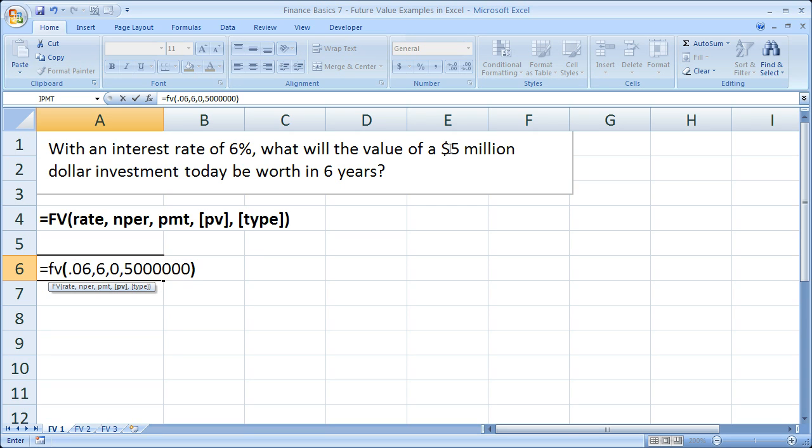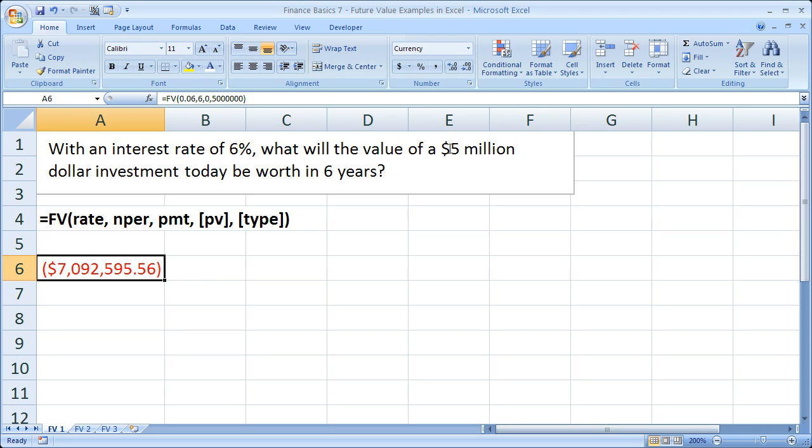And that's really all that you need for the future value function. So I'm going to hit Control-Enter. And we see that the investment in six years is going to be worth a little over $7 million.